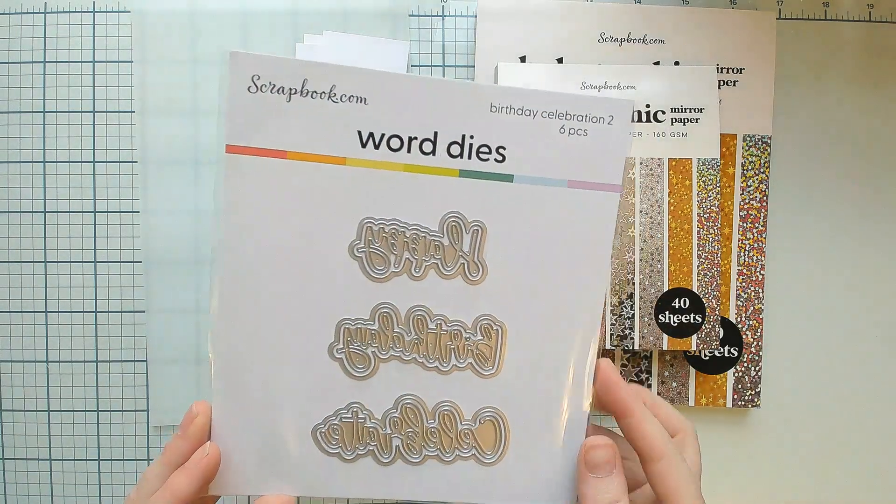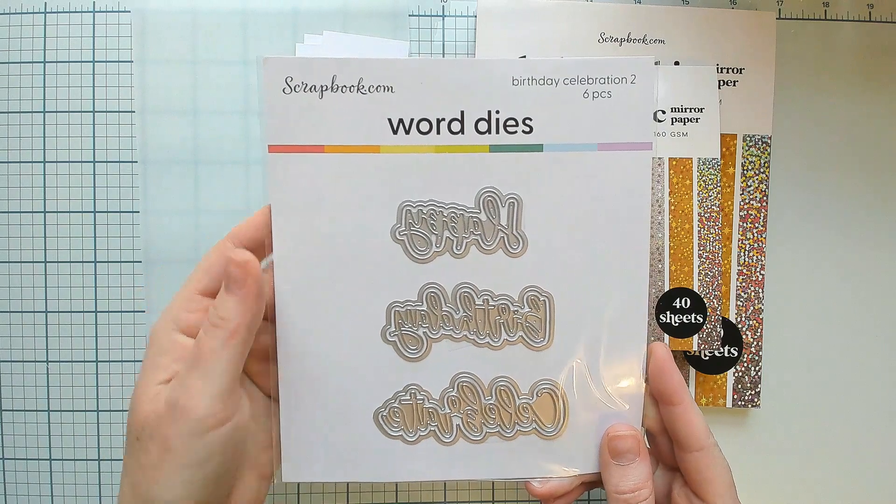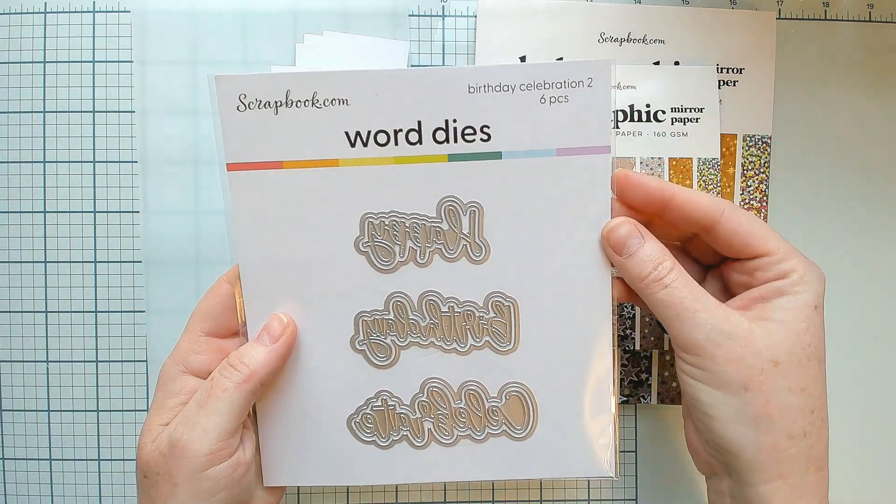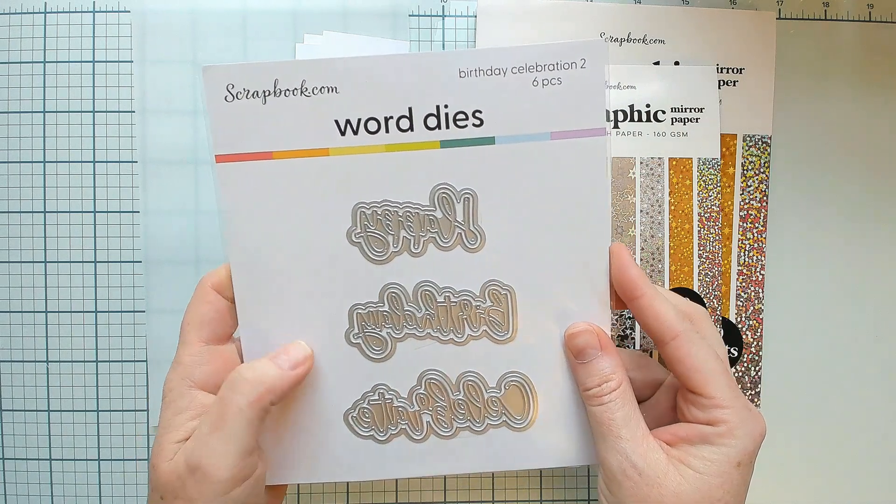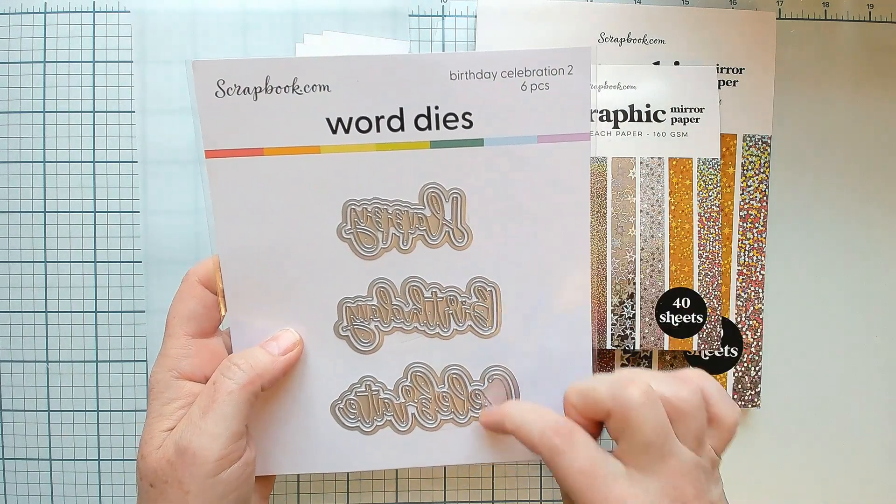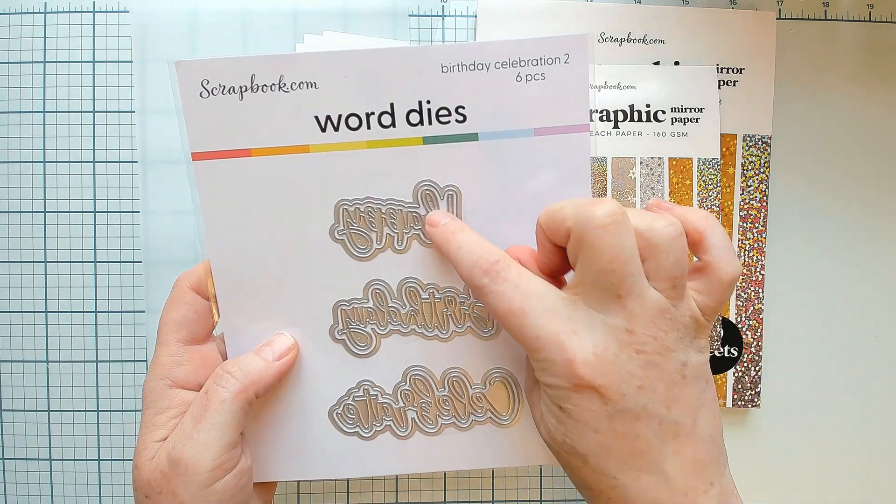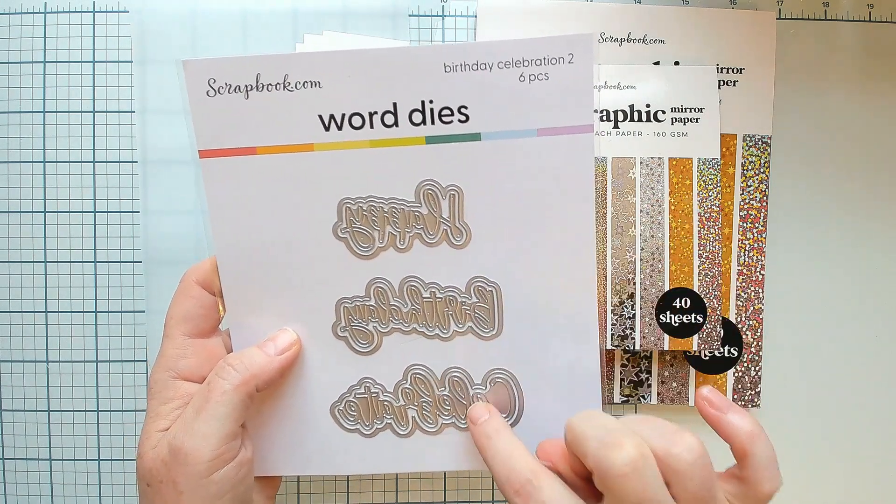Next for homework, I would like you to cut and prep your sentiment. If you're going to use the same die set as me, I'm using Birthday Celebrations 2 from Scrapbook.com and you will need to cut each one out. The way that I'm going to do mine is I'm going to cut the inner die or the word die.